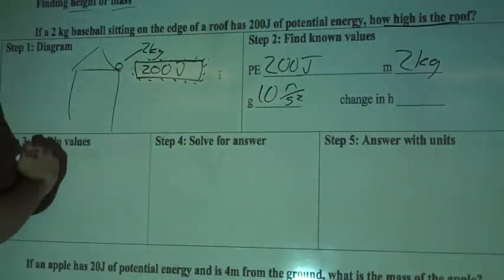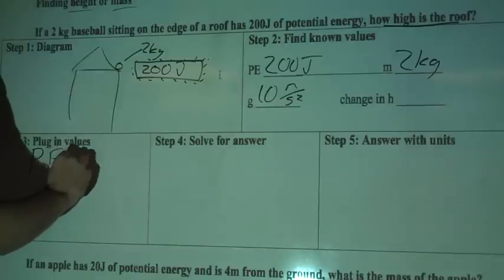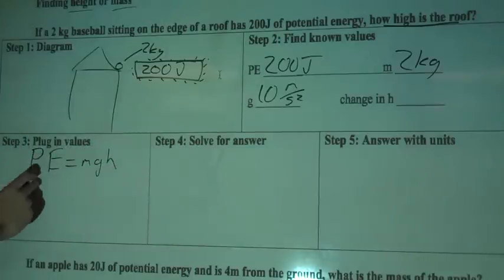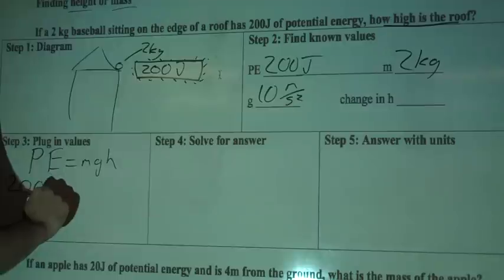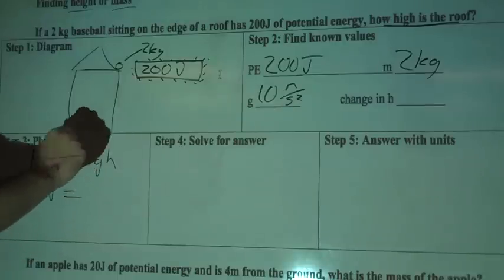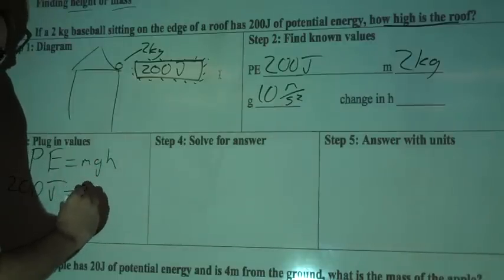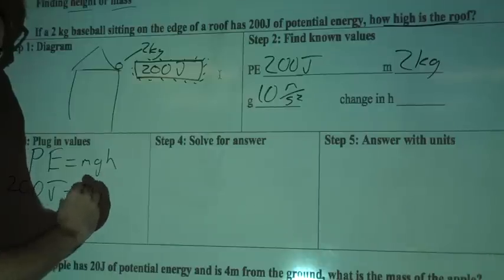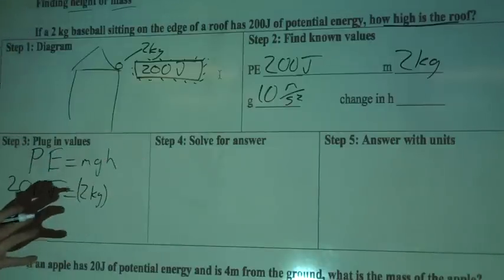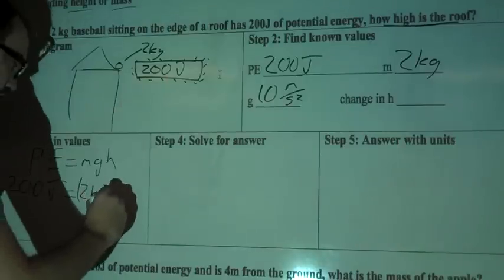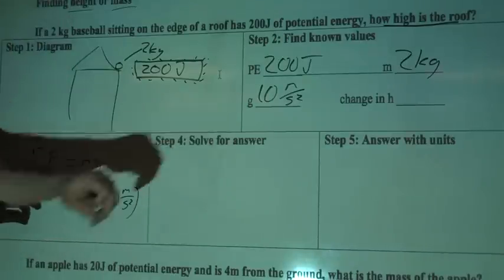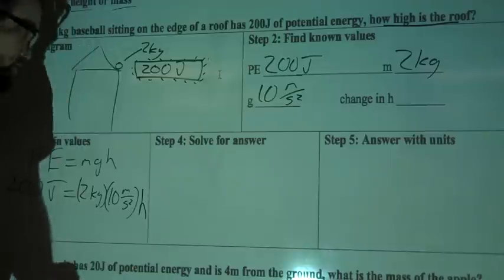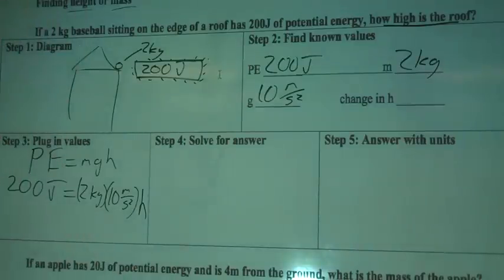So plug-in values inside our equation again, so PE equals mgh. Potential energy, I know this time, so I've got 200 joules equals my mass, 2 kilograms. Again, we're going to use parentheses so that we can separate out our numbers. Gravity, because we're on Earth, is 10 meters per second squared. And then height, we don't know, so we'll just leave h there by itself. So now we're going to solve for the answer.